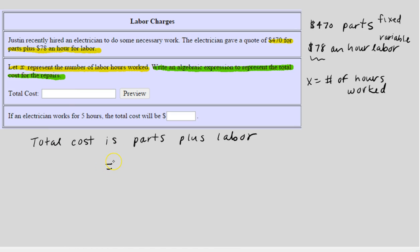Plus the labor. Well, we know that the labor is $78 an hour, but again we don't know how many hours he's going to work. So you could think: if it was one hour, you pay 1 times $78.